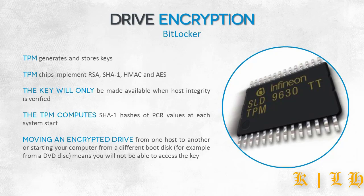The TPM module in BitLocker is not used only to generate and store keys, but also to verify the integrity of the computer. The TPM module calculates the signature of the computer's process registers. The first thing the computer launches is the old BIOS system, which saves certain information in storage registers. The TPM module reads this information and compares its hash to the hash that was previously saved. This means that a change to the integrity of the computer — for example connection to a new hard disk or even a USB drive — will cause the integrity check to fail. The checksum will not agree, and the BitLocker key stored in the TPM module will be blocked and not made available to the outside.